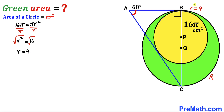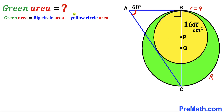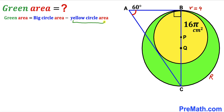The radius of the yellow circle is 4. Now let's observe that the green shaded area equals the area of the big circle minus the area of the smaller yellow circle. We already know the area of the yellow circle is 16π, so our task now is to calculate the area of the big circle, which means we must first find uppercase R.